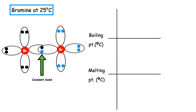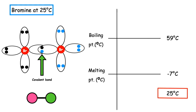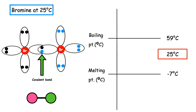Let's take some covalent molecular substances and use the grid to identify the state of matter at room temperature. If we look at bromine, we can see that it is covalent molecular with a shared pair of electrons and a linear structure. The melting point is minus seven degrees Celsius and the boiling point is 59 degrees Celsius. Room temperature is 25, which falls in the middle of that range, meaning bromine is a liquid at room temperature.